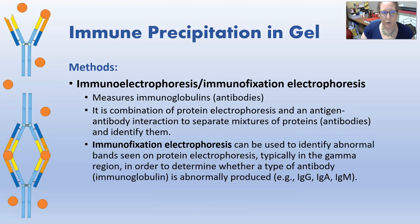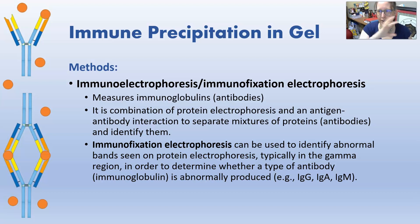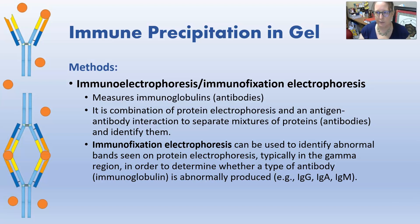You also have immunoelectrophoresis or immunofixation electrophoresis, which is used to measure immunoglobulins as antibodies. It's a combination of protein electrophoresis and antigen-antibody interaction to separate mixtures of proteins and then identify them. The electrophoresis will separate the proteins, and then the antigen-antibody reaction will be used to identify them.